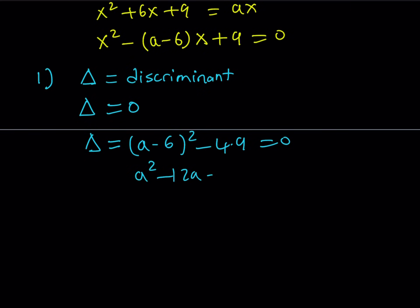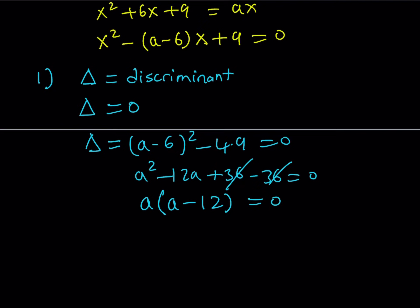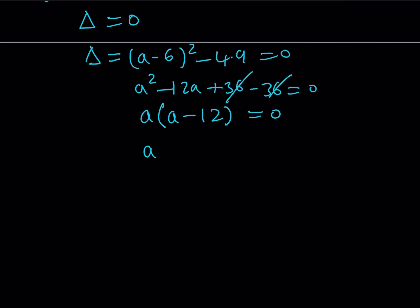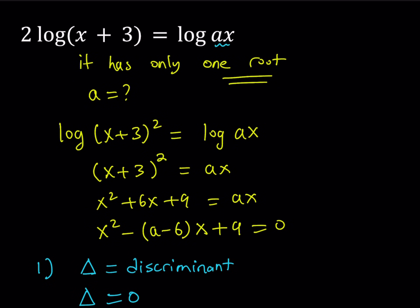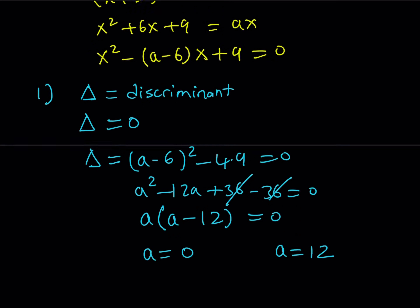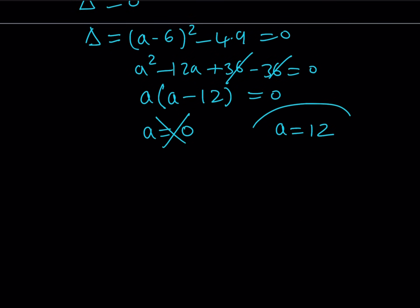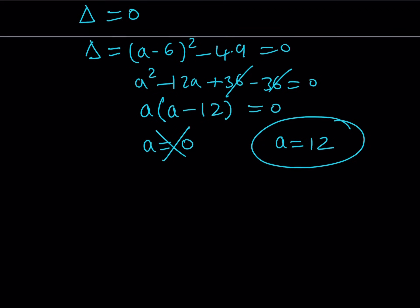Expanding: a squared minus 12a plus 36, minus 36 equals 0. The 36s cancel, and we end up with a times (a minus 12) equals 0. From here we get two values: a is either 0 or 12. Now, a equals 0 is not acceptable because if you look at the original problem, a equals 0 turns the expression log(ax) into log(0), which is undefined. So we discard a equals 0 and go with a equals 12, which means the equation has only one root if a equals 12. But that's not the only case.